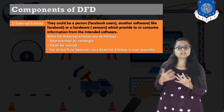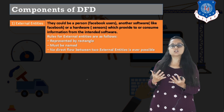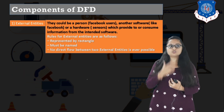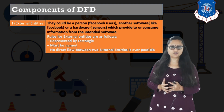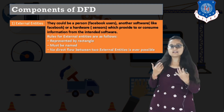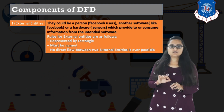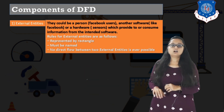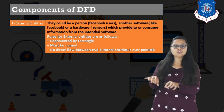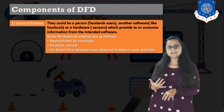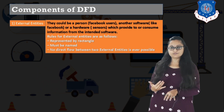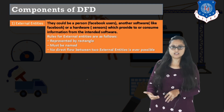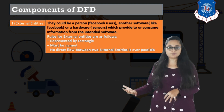Let us see what we mean by a person as an external entity. For example, if you are using Facebook, you as a Facebook user write down login information — you are entering data into the system. So you are an external entity in the data flow diagram.